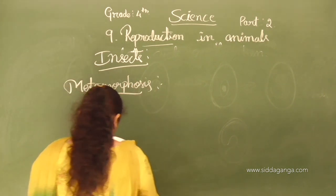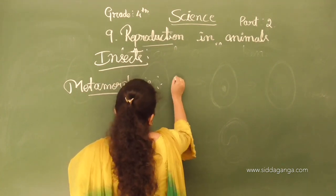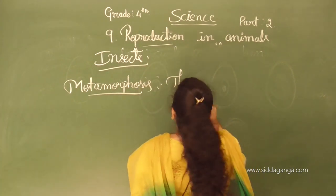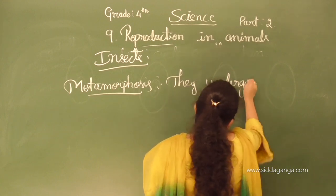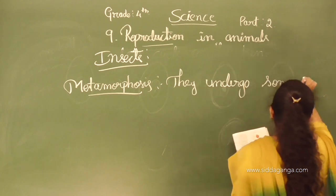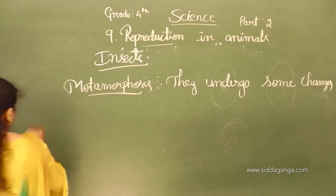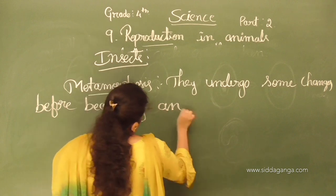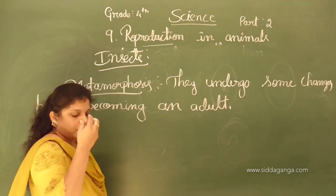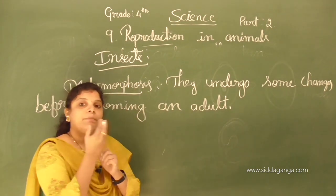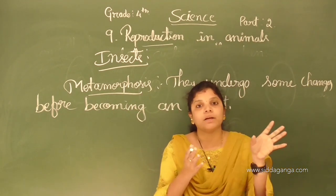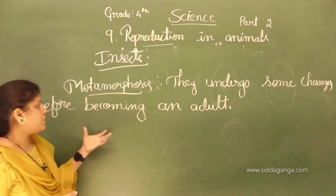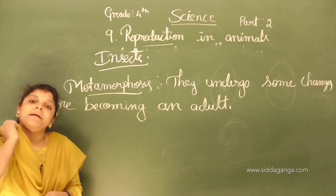Metamorphosis means the changes an insect undergoes before becoming an adult. The insect egg is hatched and the insect goes through many changes in their life cycle before becoming an adult. This type of development is called metamorphosis.